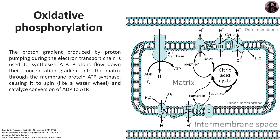Oxidative phosphorylation is the final stage. It occurs in the mitochondrial inner membrane. The main aim of oxidative phosphorylation is to produce multiple molecules of the energy-carrying molecule, ATP. ATP is produced from the phosphorylation of ADP, hence the word phosphorylation in oxidative phosphorylation. And this is why we need oxygen — so carry on breathing.